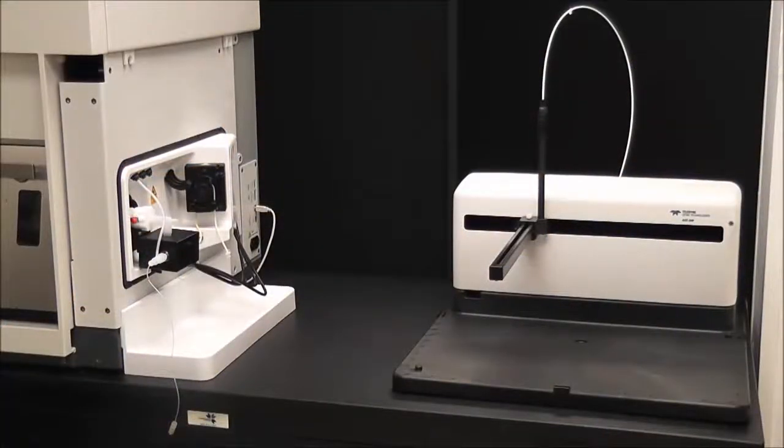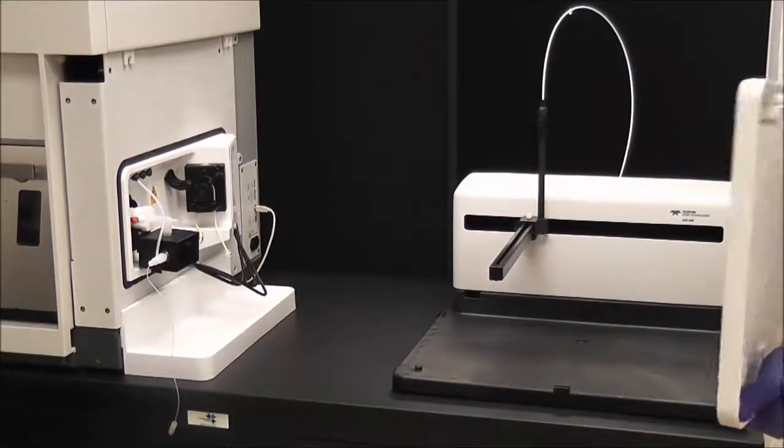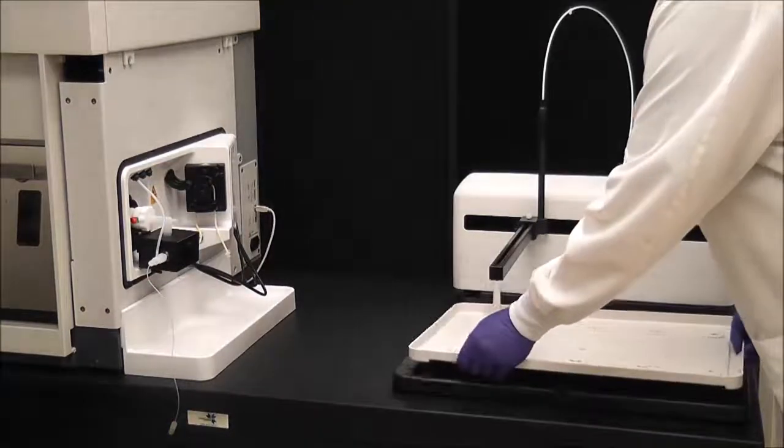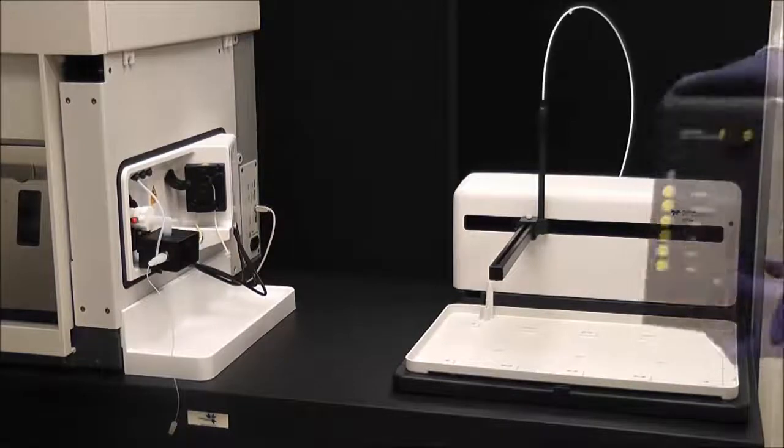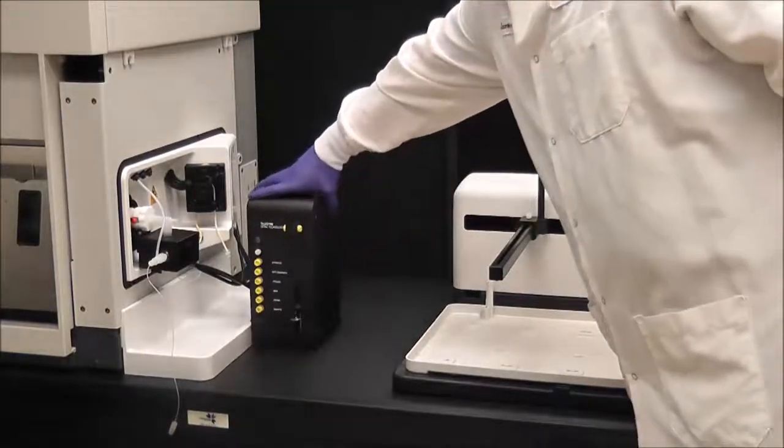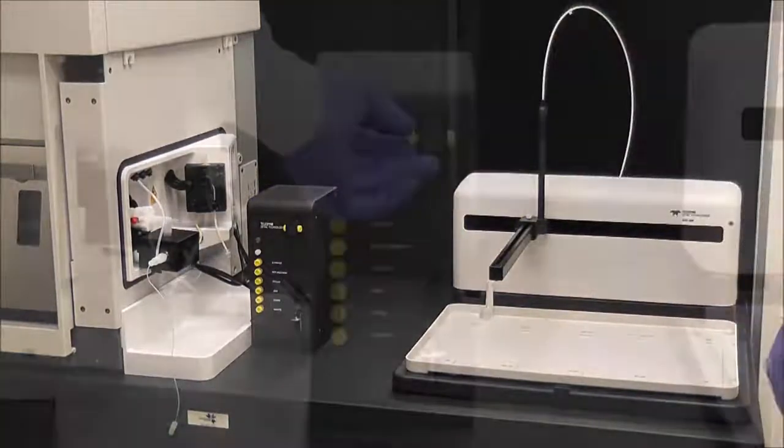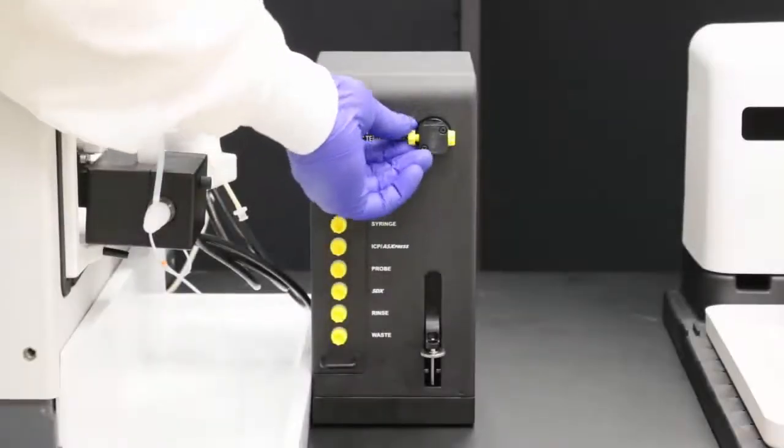Let's begin. Install the SDX spill tray. Place the SDX pump module next to the auto sampler. Remove the protective yellow caps.